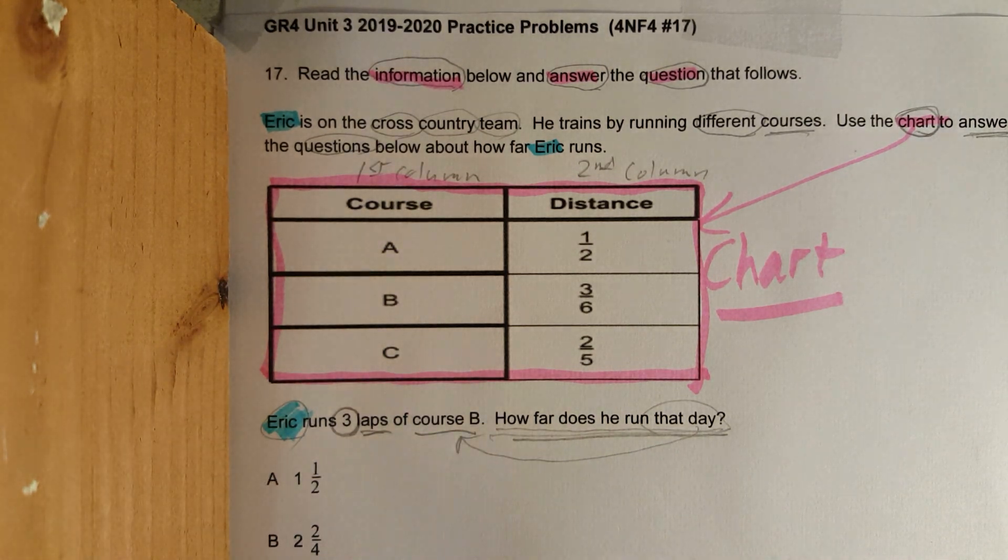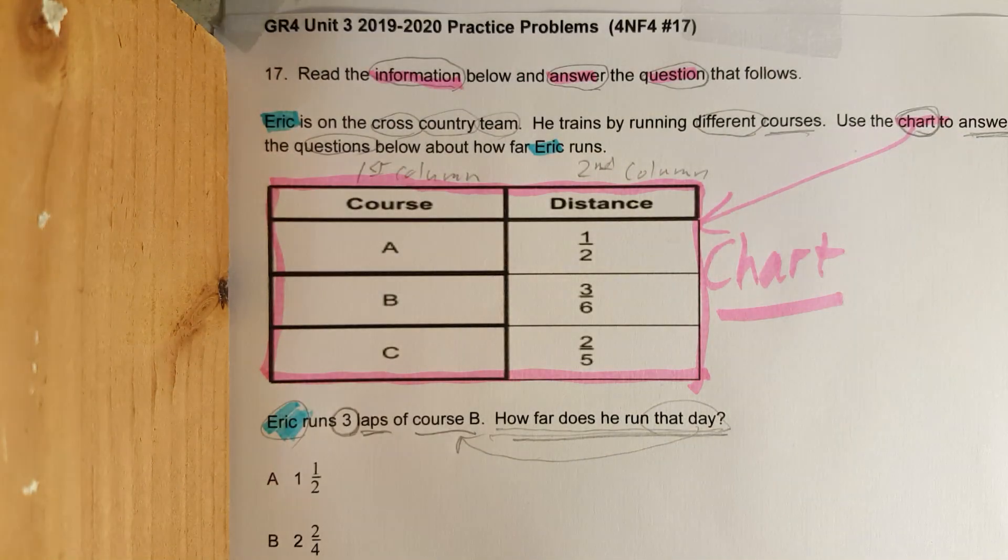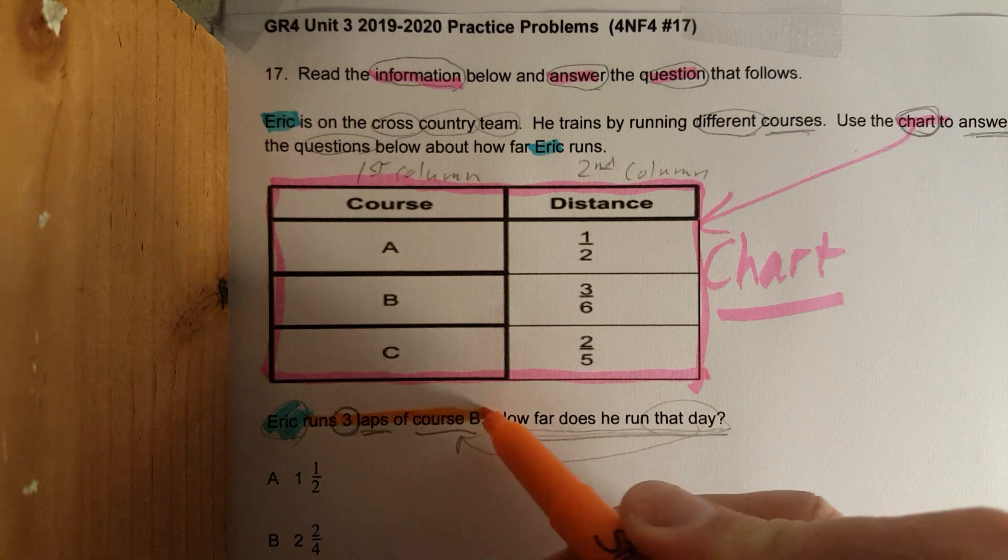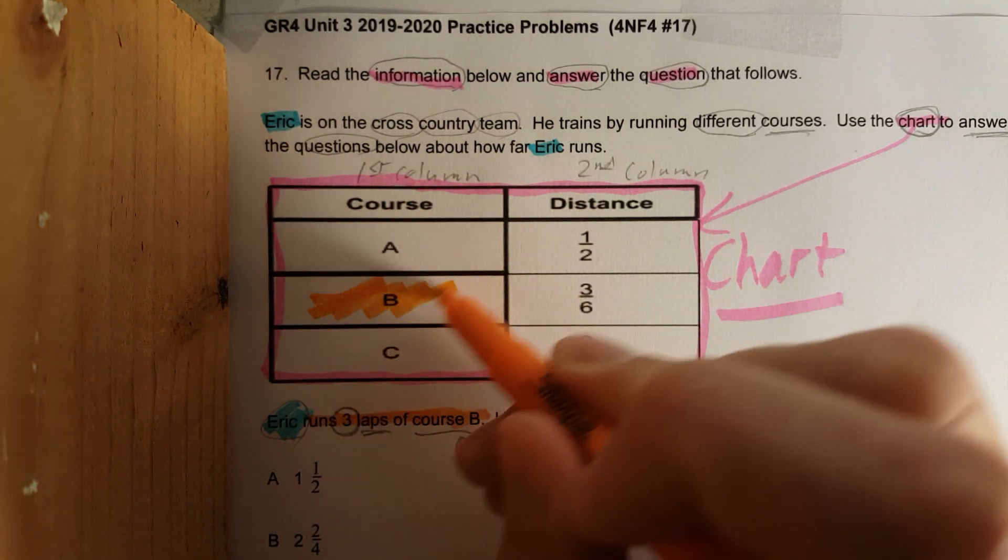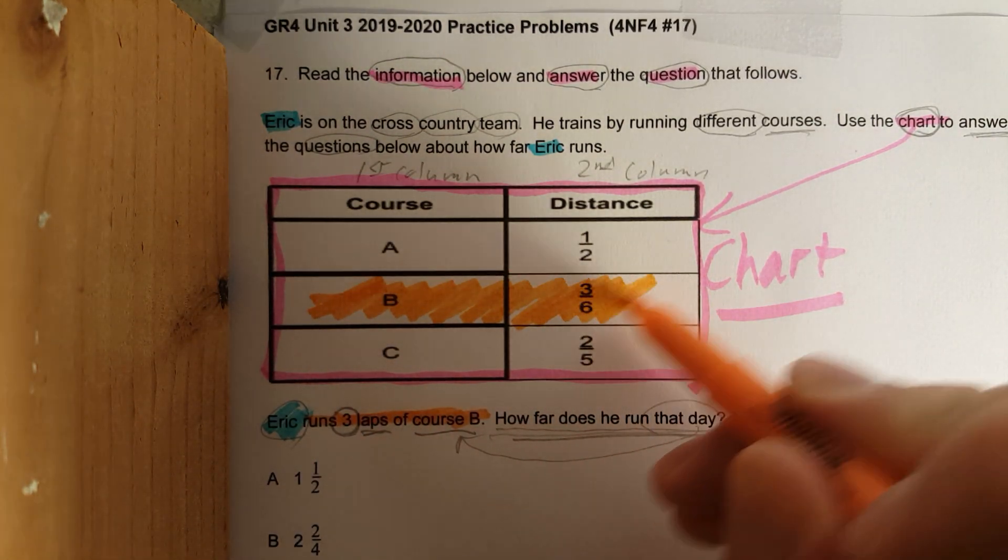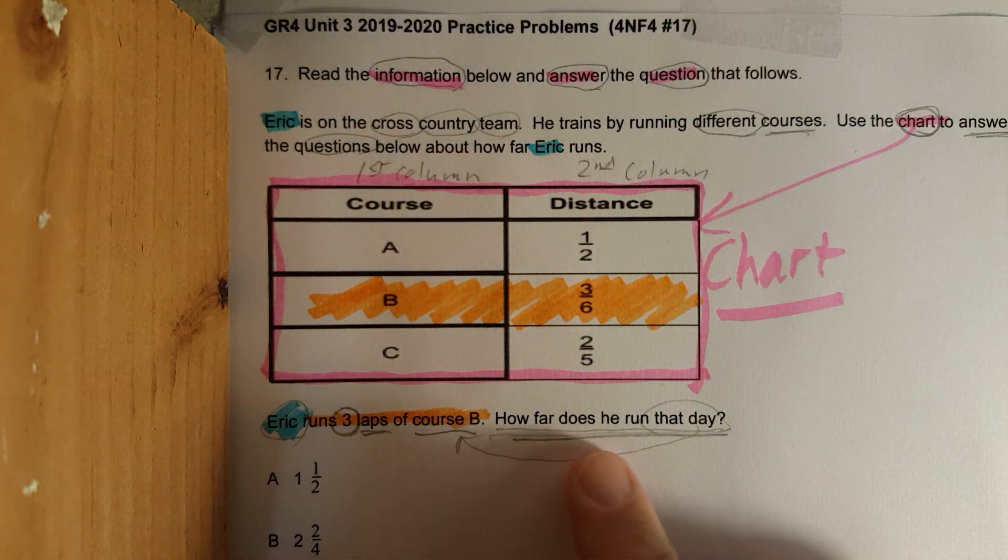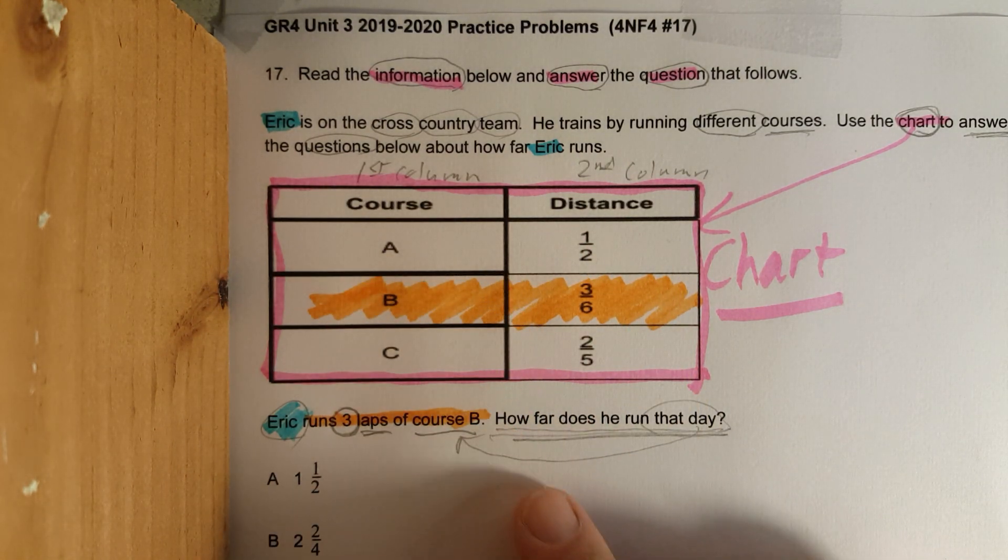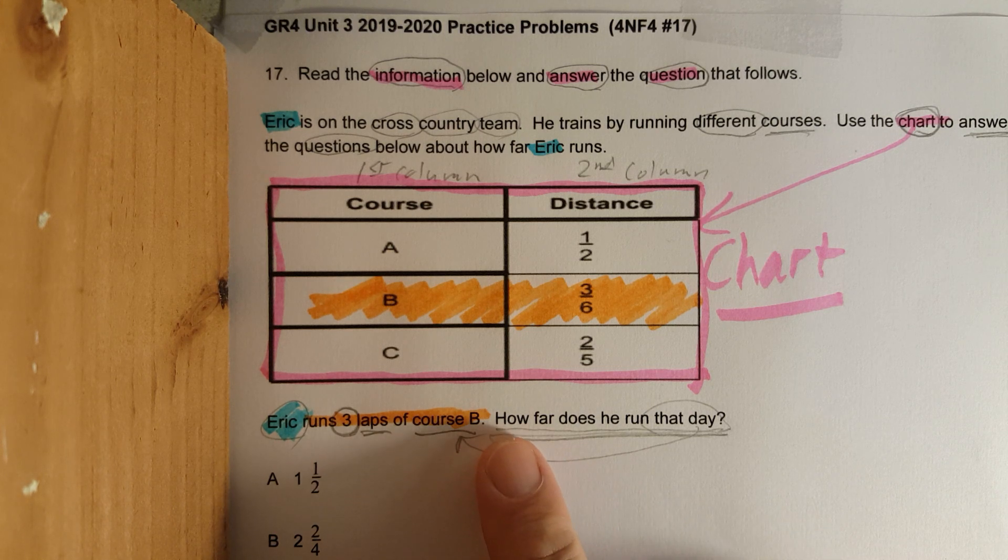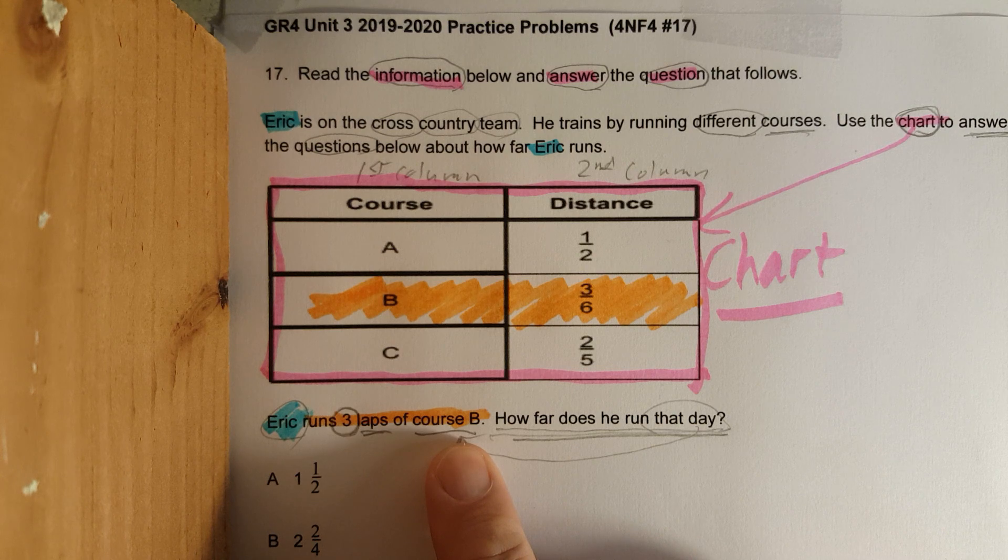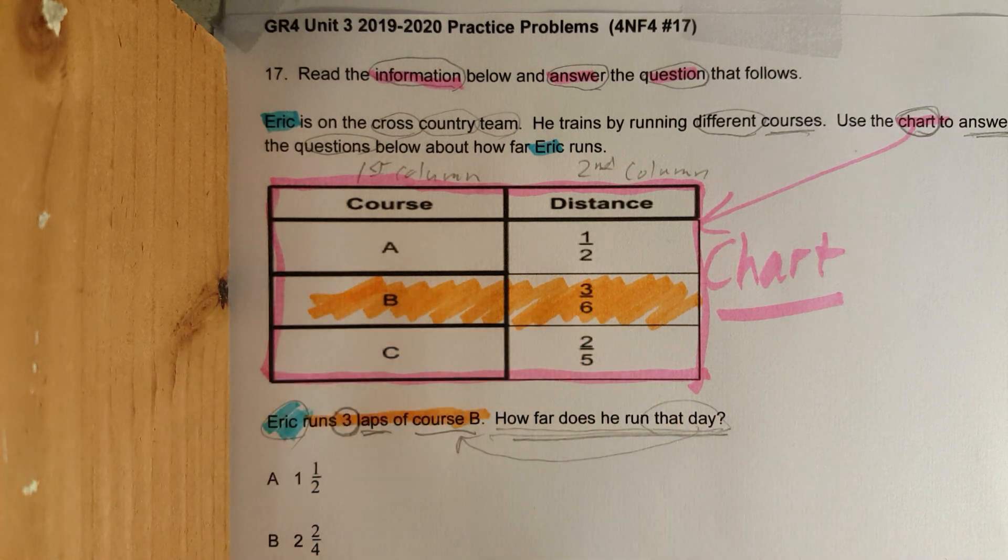Okay, now watch this pop out. He only runs three laps of course B. This is the only information you need to know. You are not adding all these. It doesn't say how far does he run for course A, B, and C. Okay, it just says how far does he run that day. He runs three laps of course B. So this is all we need to look at.